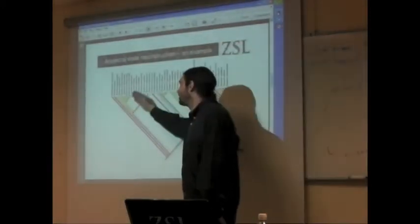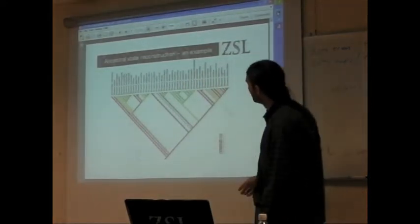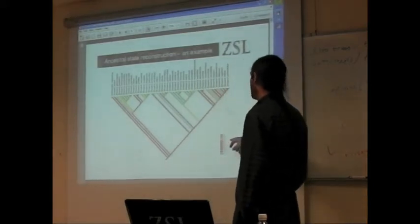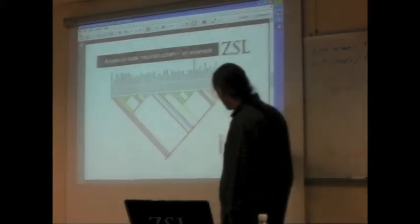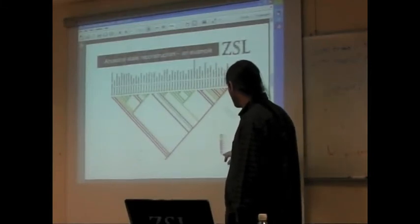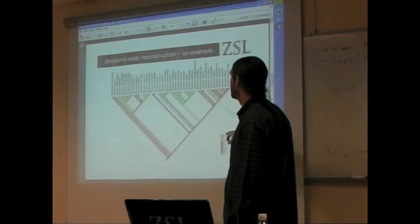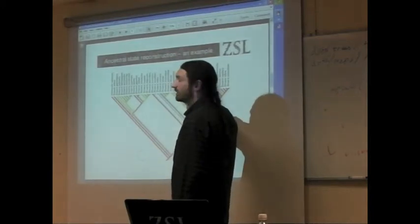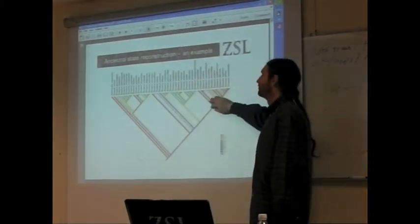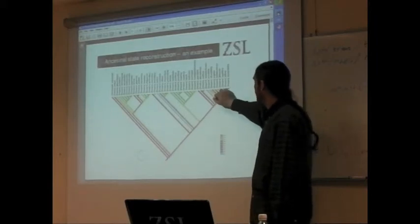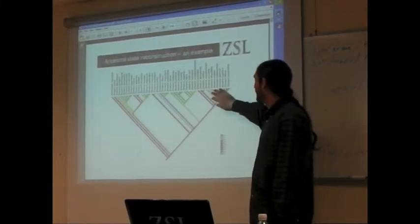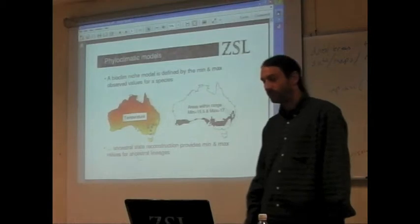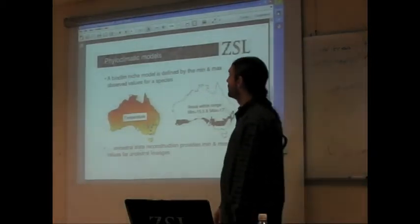Here's an example of a larger phylogeny where the colours represent — I think this is precipitation — where the red-purple colours represent higher values and the green colours represent lower values. So we've got our drought-tolerant species in one clade and the more hydrophilic, rain-loving species in another clade. That's an ancestral state reconstruction.